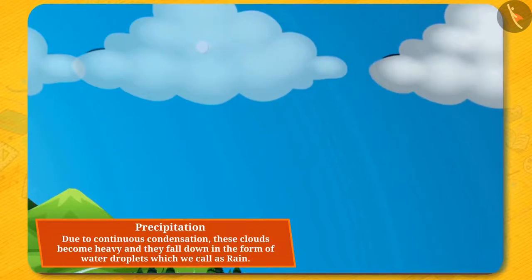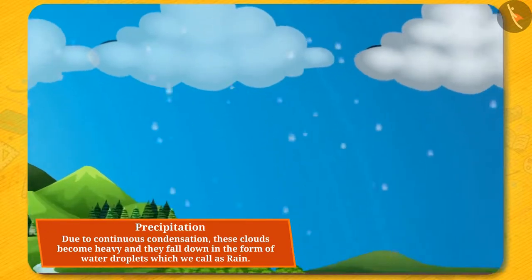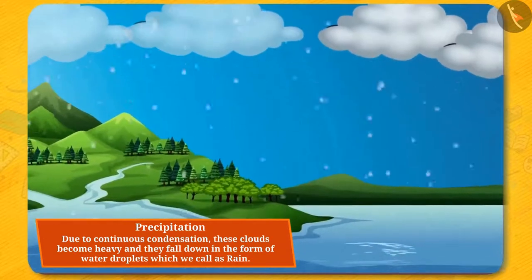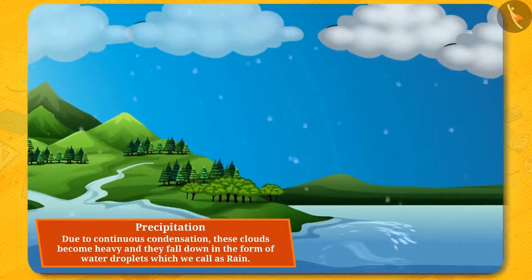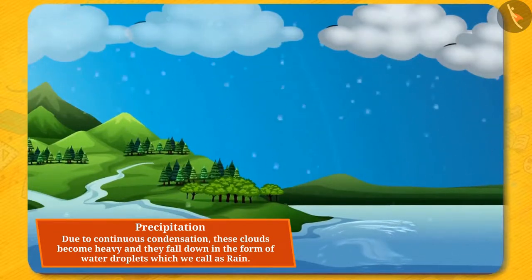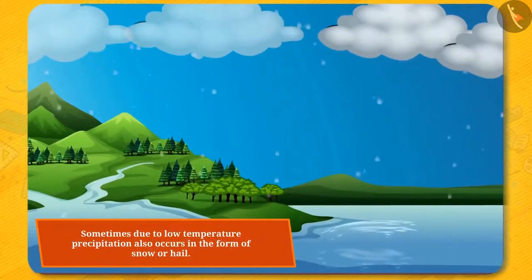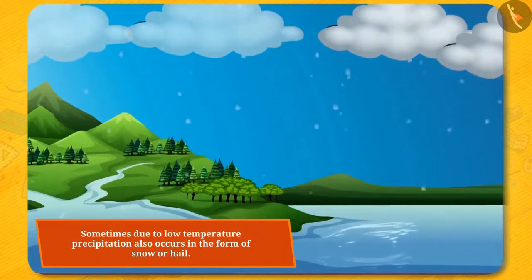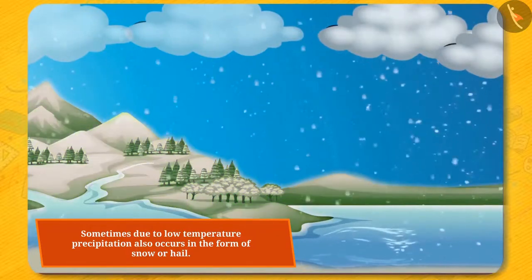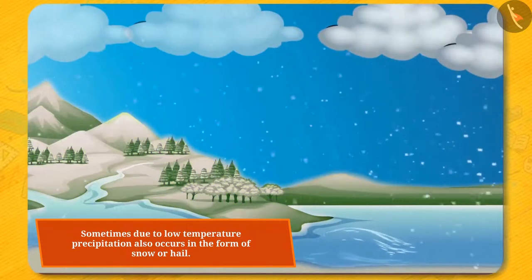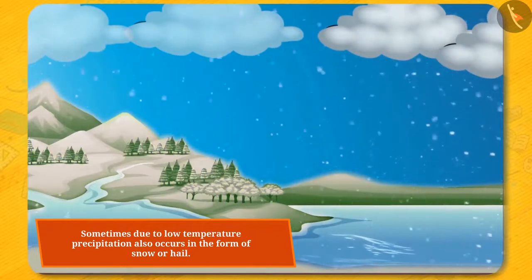Due to continuous condensation, these clouds become heavy and they fall down in the form of water droplets, which we call rain. This process is called precipitation. Sometimes, due to low temperature, precipitation also occurs in the form of snow or hail.